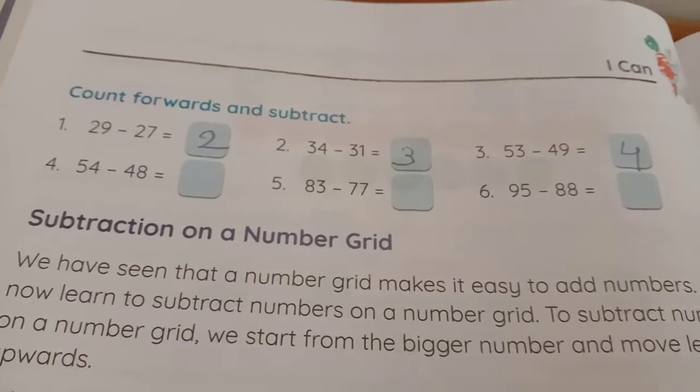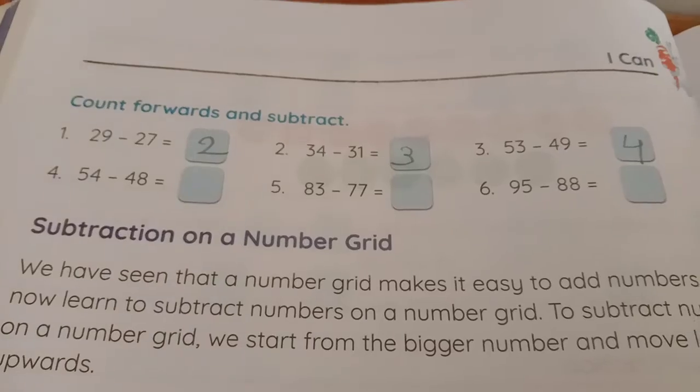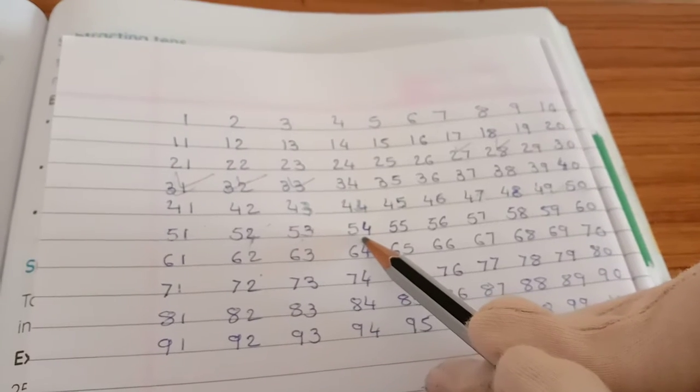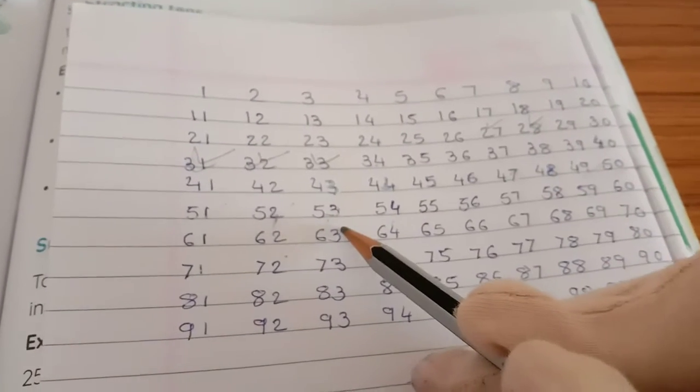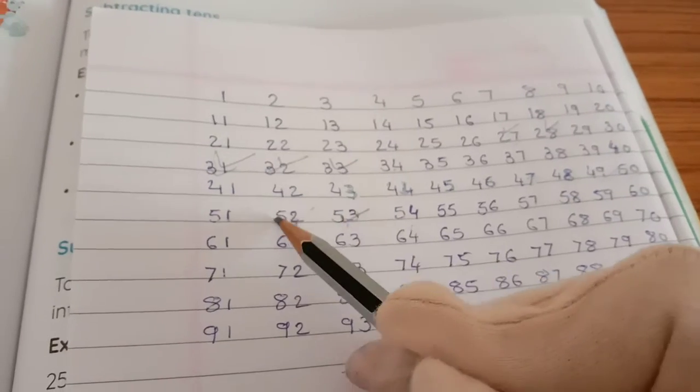Now next 54 minus 48. 54 minus 48, so one minute. 54, we have to go 48. So 54, then we have to go backward side, back side. 53, 52,